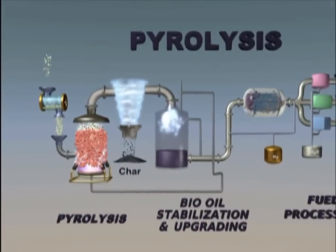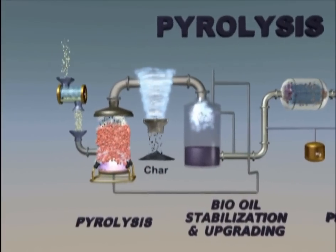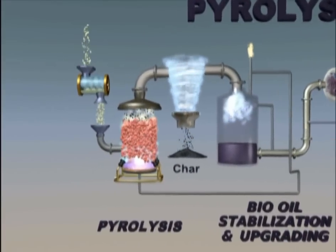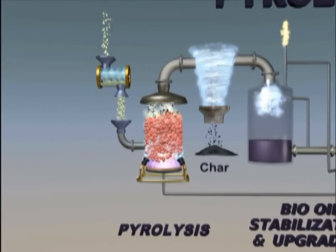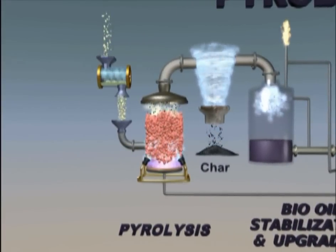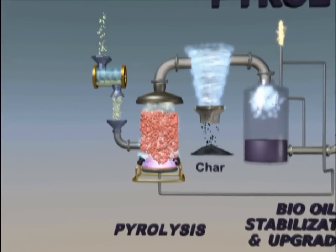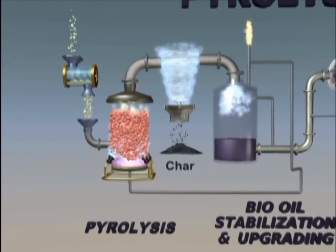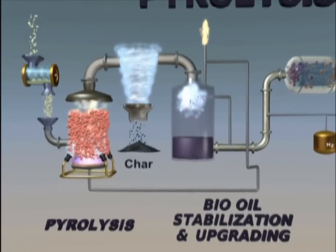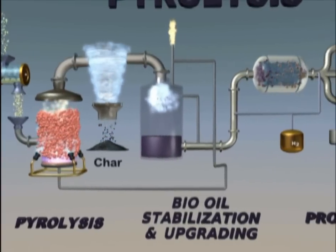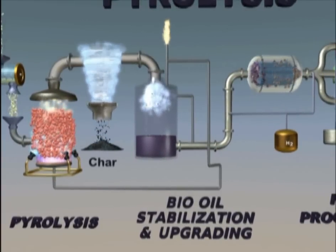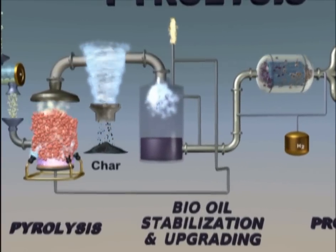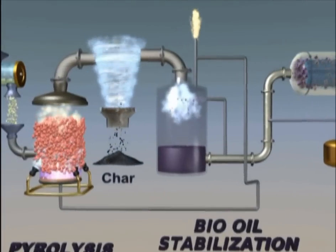The process of pyrolysis heats the biomass at moderate temperatures in the absence of oxygen. This produces vapors that are condensed into liquid bio-oil. Char is also produced during the pyrolysis process.